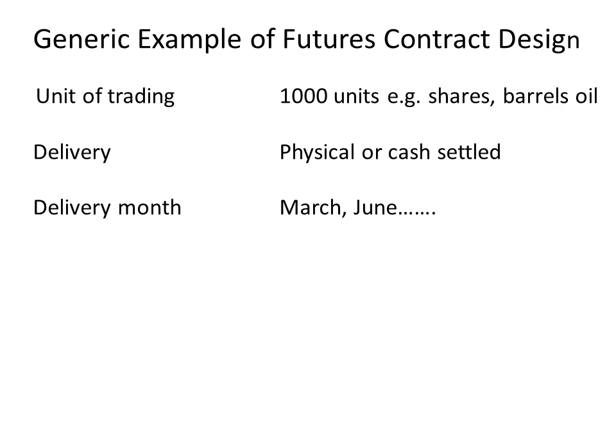The futures contract specifies specific months of delivery, which tend to be quite limited. For example, this particular contract may state that delivery can only take place on the third Wednesday of March, June, September, and December of a given year. Having a limited number of deliveries focuses trading and keeps liquidity high, which is an advantage for all participants — enabling them to easily enter and exit the market. The futures price is quoted in dollars and cents expressed per one unit of the underlying asset.